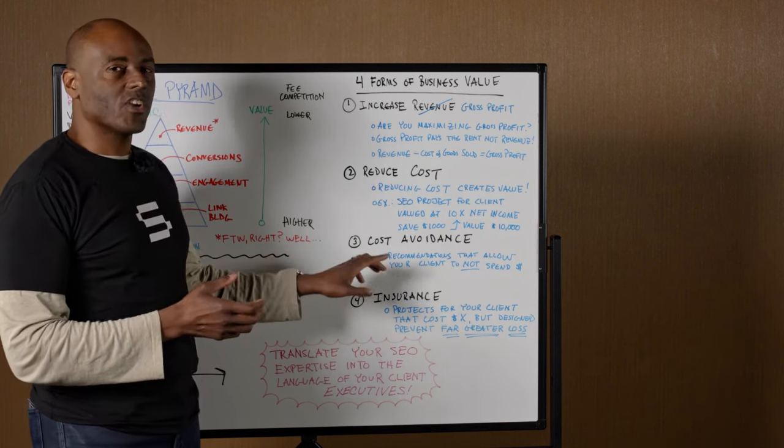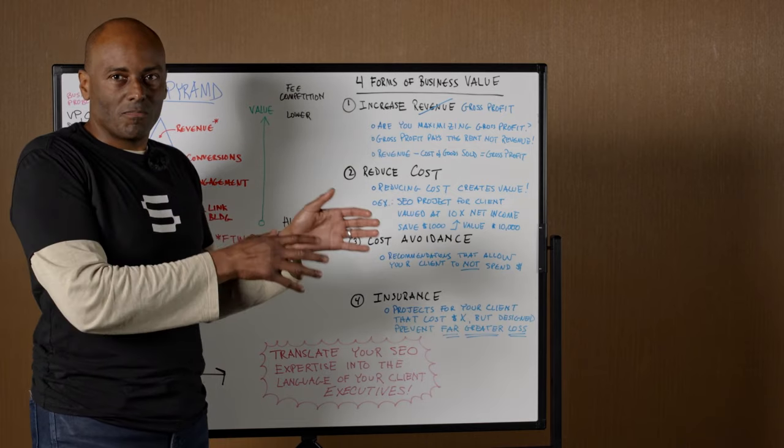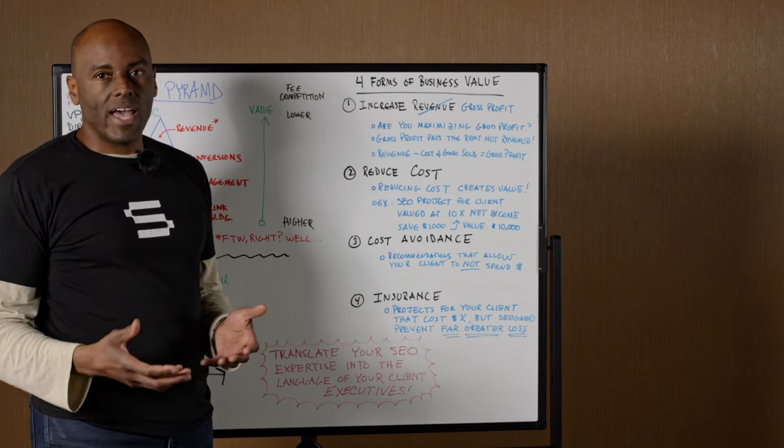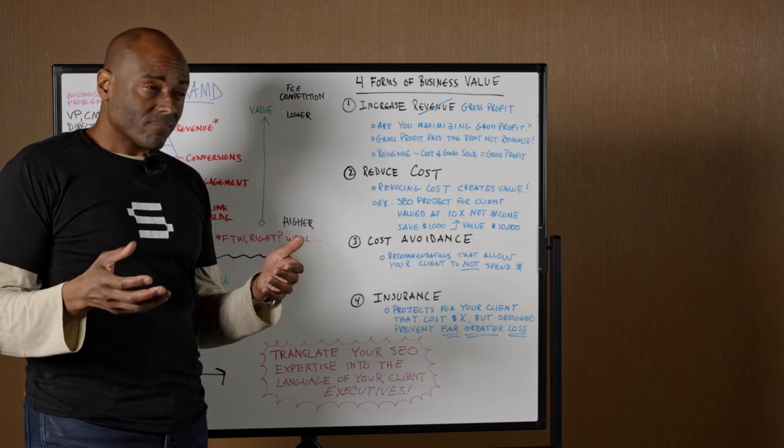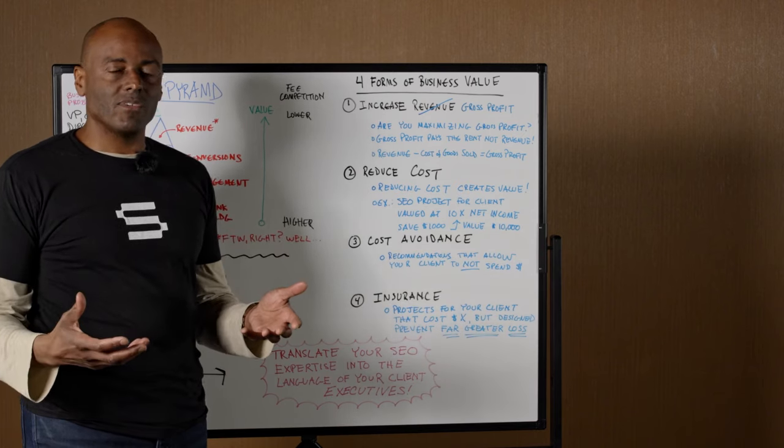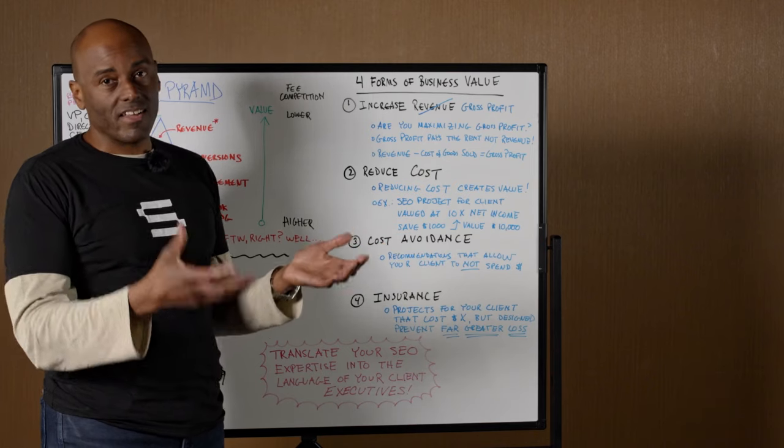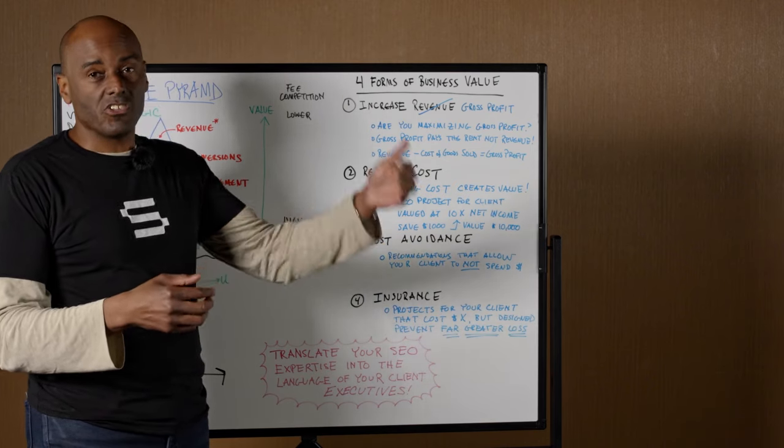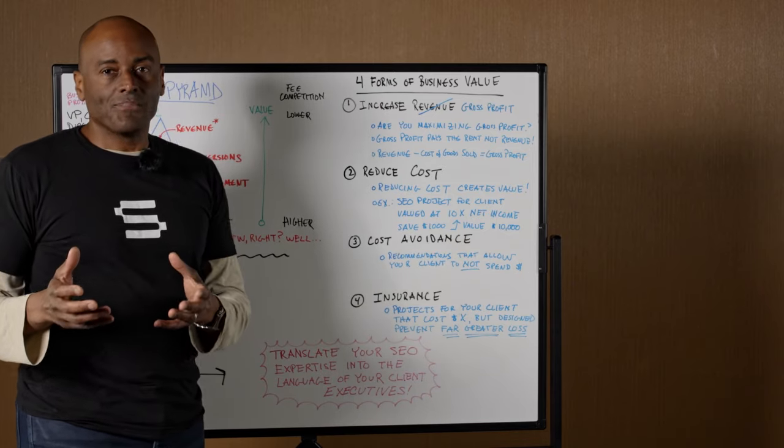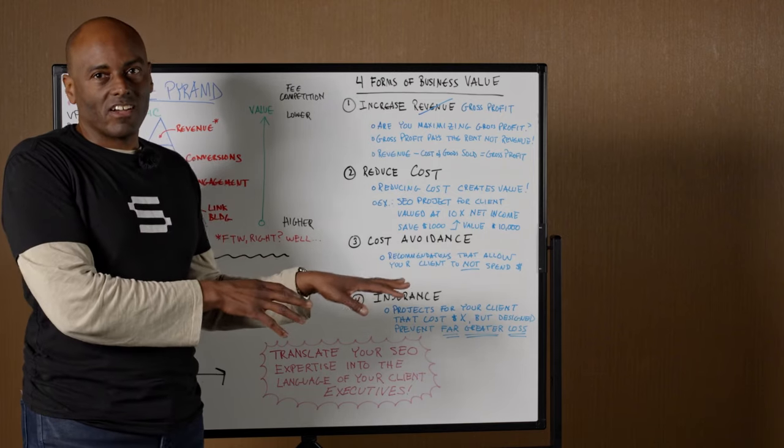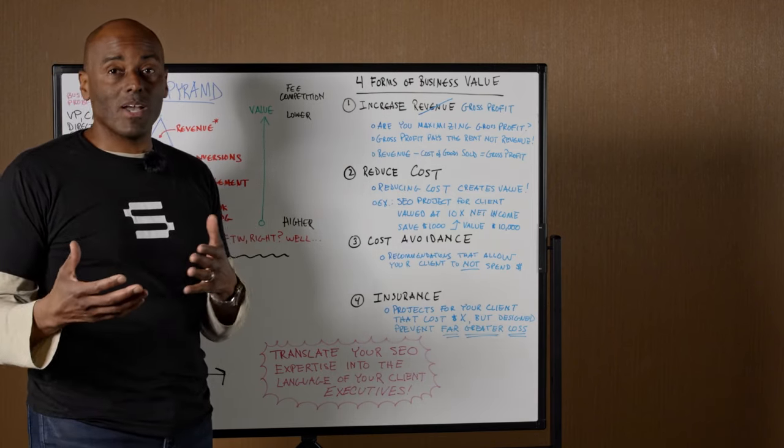The other one is cost avoidance. This is a tricky one. This basically means what recommendations we can make for a client that will allow them to not spend money on something in the future. Some time ago, we had a client running an M-dot site and their .com for desktop. They maintained them both, but it came time to upgrade their CMS. They had two options: upgrade both systems and continue to maintain separate mobile and desktop experience, which would require hiring additional developers and another agency.